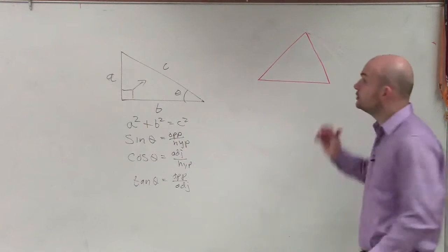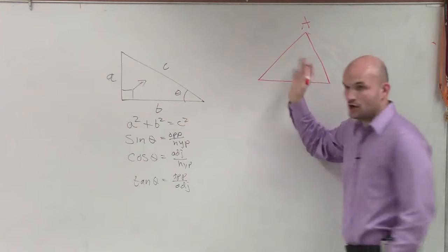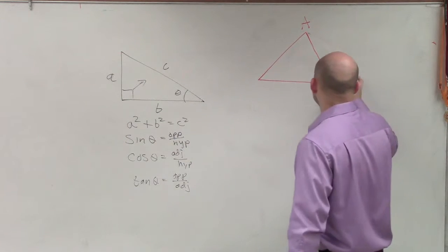When we're labeling our oblique triangle, notice that all these angles are acute. We'll label them A, B, and C.